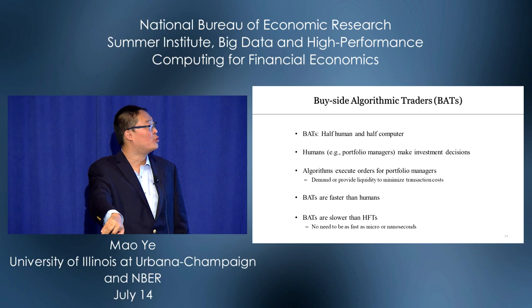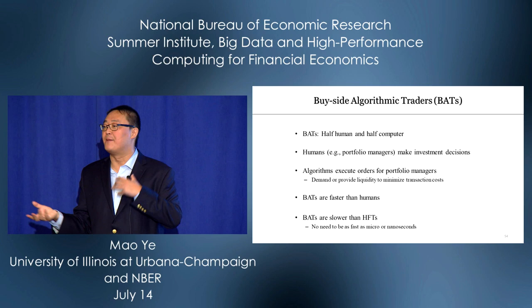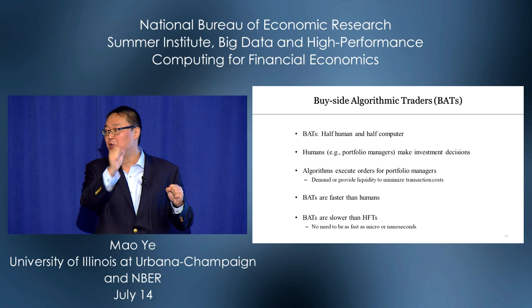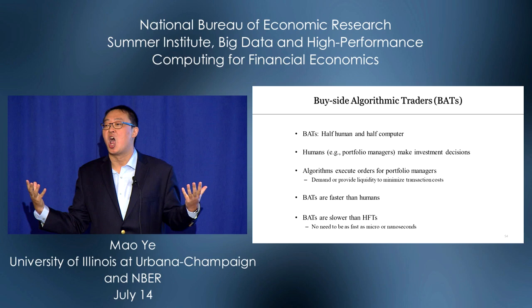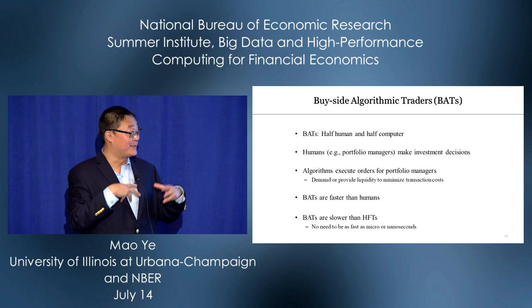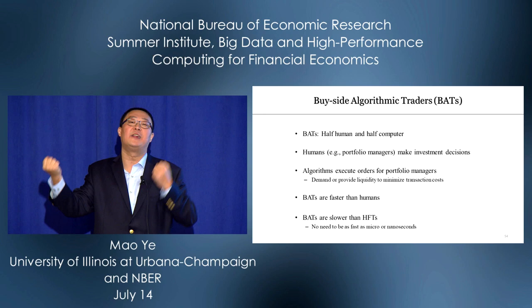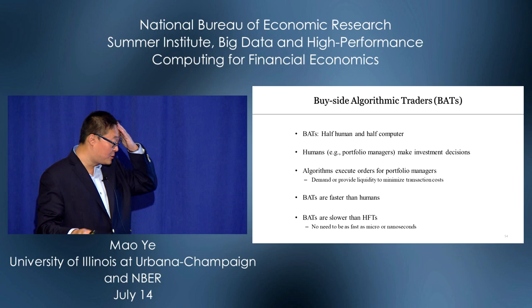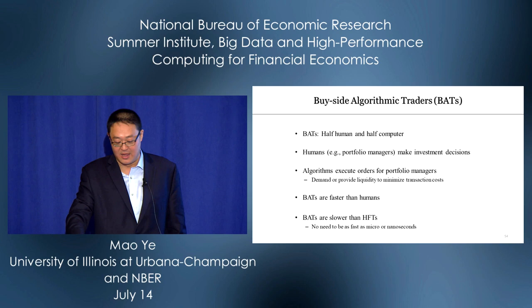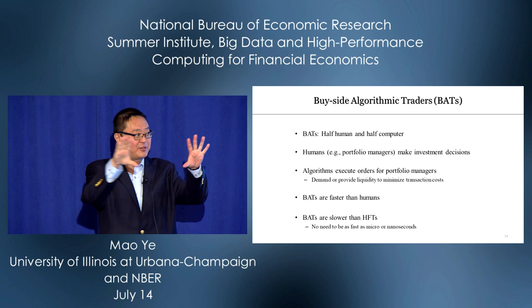Why call BATs half-machine, half-human? Portfolio managers make investment decisions — say, buy one million shares of Google. But the market is so complex they need computer algorithms to execute orders. The algorithm's decision is whether to demand or supply liquidity to minimize transaction costs. BATs are faster than humans but slower than HFTs — they don't need to be as fast as HFTs, because unlike HFTs they don't need to consistently monitor the market for any opportunity.